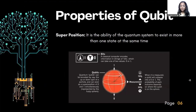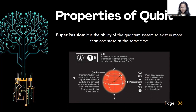Properties of qubit. Superposition: it is the ability of quantum systems to exist in more than one state at the same time. A classical computer encodes information in strings of bits which take one of two values — zero or one — whereas qubits can be encoded by the up or down spin of a particle and can exist as a superposition of zero and one simultaneously. When measured, a qubit will collapse into a zero or one; the probability of each outcome depends on where the qubit is on the sphere.